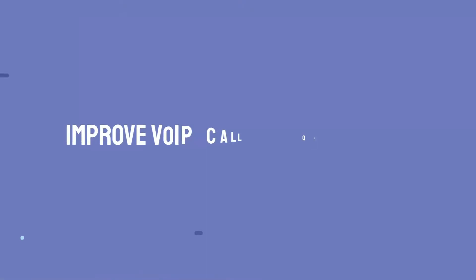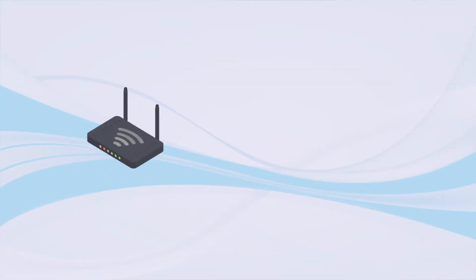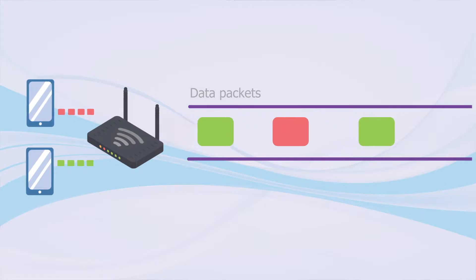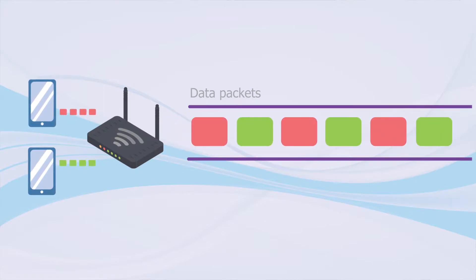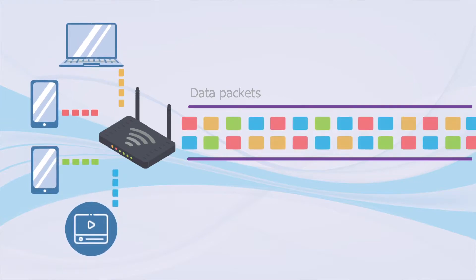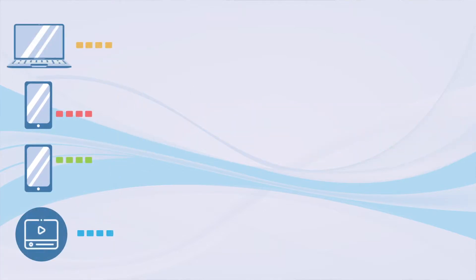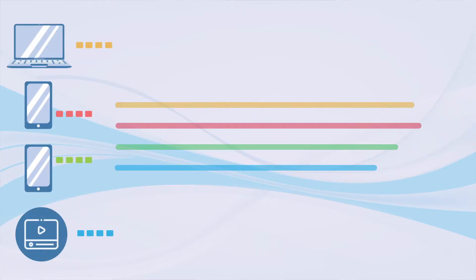Without QoS, VoIP calls may not function optimally, and you must address that. Routers generally handle data packets via a first-in, first-out order, meaning all traffic from every device on a network is given the same level of priority. When bandwidth usage is high — that is, when too many people use the internet simultaneously — data packets can end up in long queues, and calls have to compete with other applications running on the network, often leading to low audio quality.